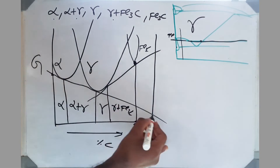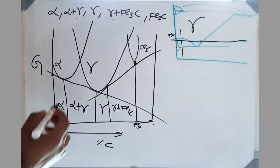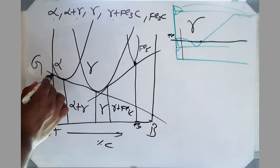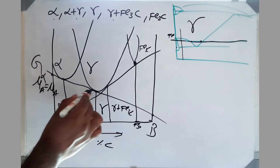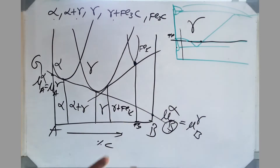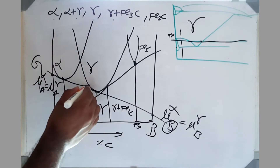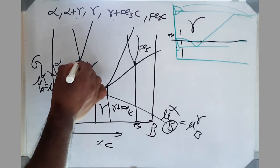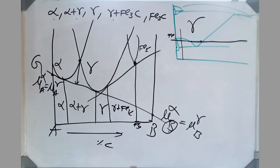The common tangent gives us the chemical potential of the respective elements in each phase. When we draw a common tangent between two phases, the chemical potential of each element is equal in both phases. For example, the chemical potential of A in alpha equals the chemical potential of A in gamma, and similarly for B. This equality of chemical potentials is the condition for equilibrium. This differentiates the alloy system from the pure metal system — in a pure metal we use equality of free energies, but in an alloy system the system can lower its free energy by changing compositions to the common tangent points.